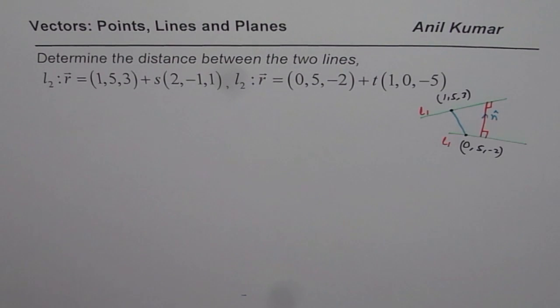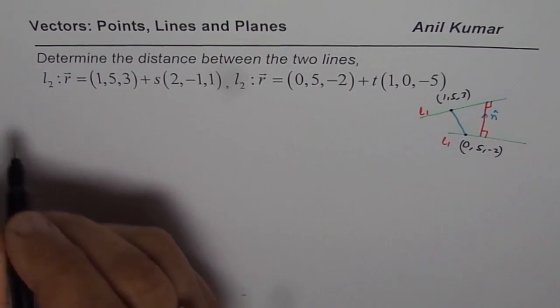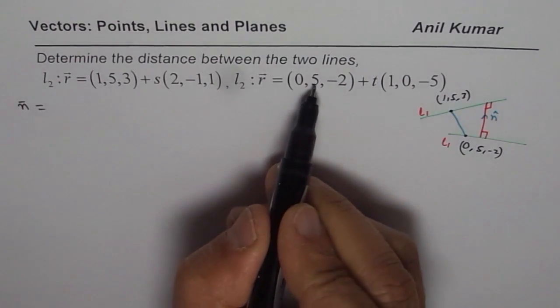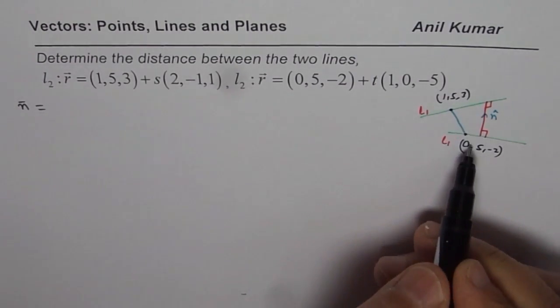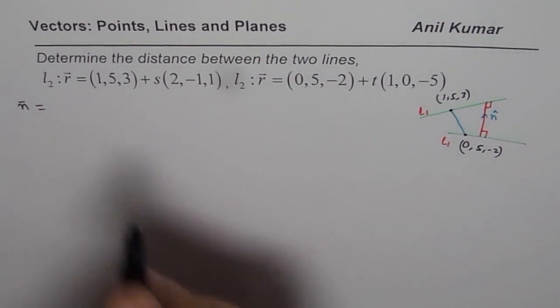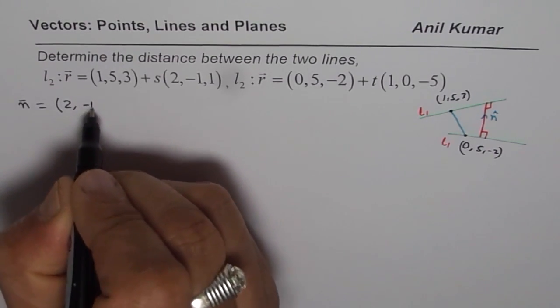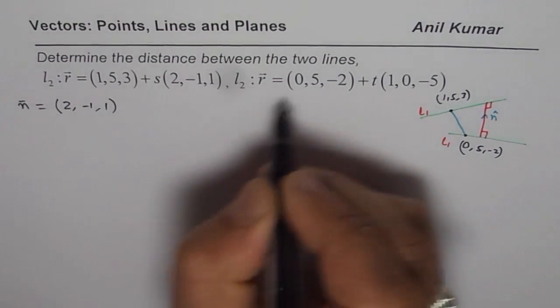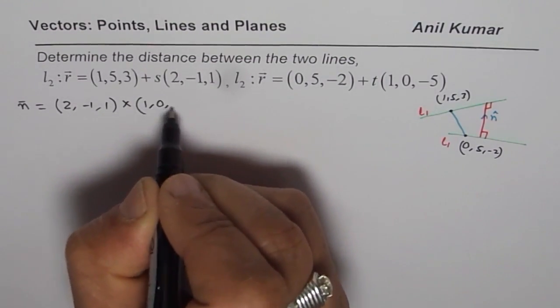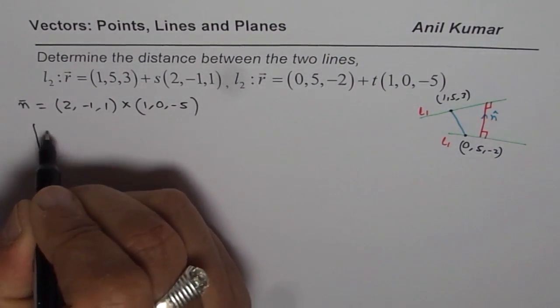So, let us first begin by finding unit vector n. So, n as such will be equals to cross product of these two directions. So, when you do cross product, you get normal, which will be normal to both. So, first step is to find cross product. So, (2,-1,1) cross (1,0,-5). Let me use the method of matrix to find the cross product.